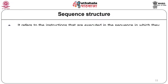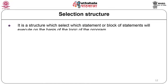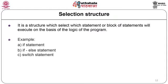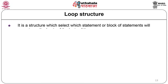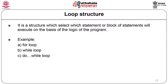Sequence structure refers to instructions executed in the order in which they are written — for example, a compound statement with statement 1, statement 2, and so on. Selection structure selects which statement or block of statements will execute based on program logic — examples are if, if-else, and switch statements. Loop structures are used to repeat statements — examples are for loop, while loop, and do-while loop.